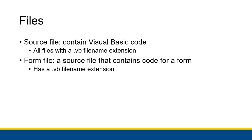A form file is a source file that actually contains code for a form. It still has a .vb file name extension because it's still Visual Basic, but it's a Visual Basic source file that contains code for a form. So when you go into the template and create a new form, that form is going to be saved in a form file. A form file specifically contains code for a form, though you might have other Visual Basic files that don't have a form in them.